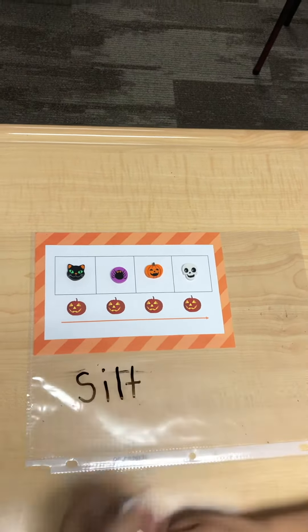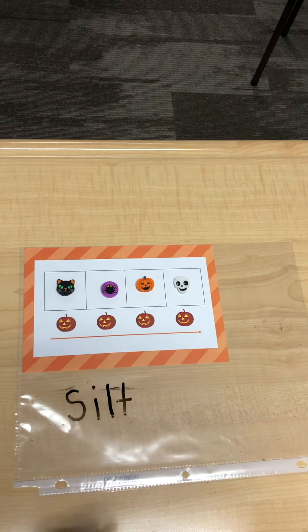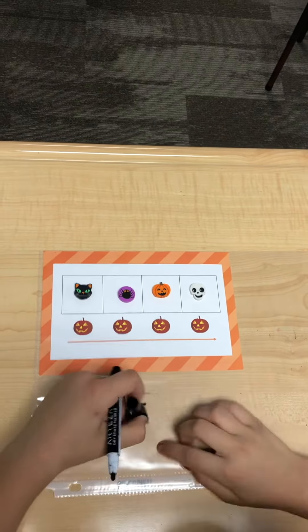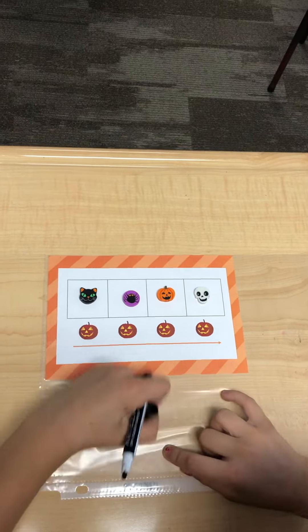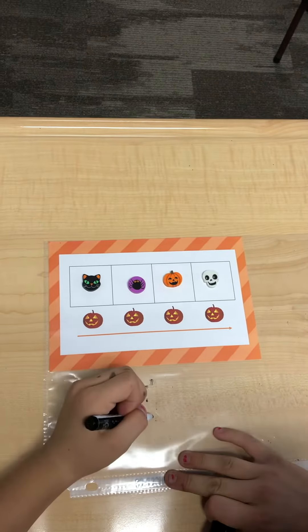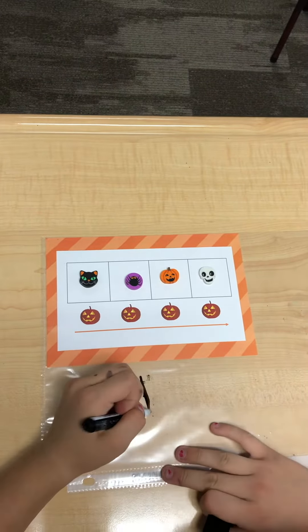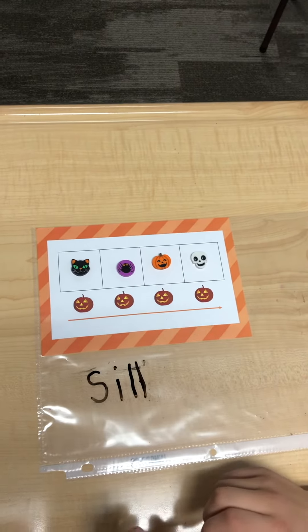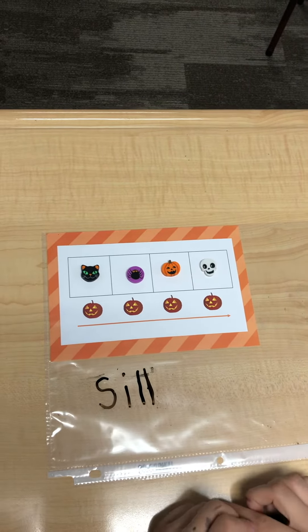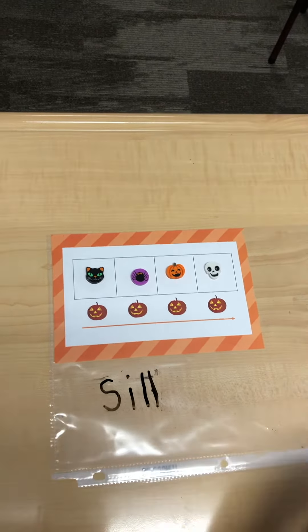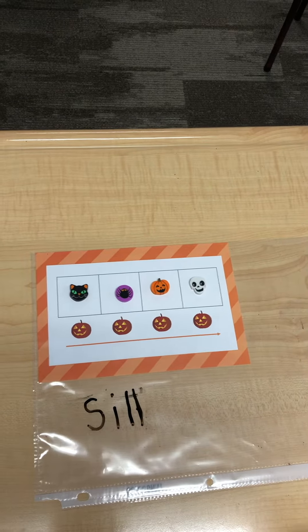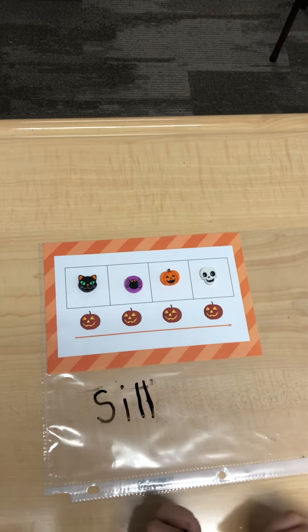Now say silt, but don't say T. Sill. Sill — like a window sill. If I was going to spell sill, what would I need to do? Floss. I would need to double the L. Why? Because it's a floss — it's a short word with a short vowel, so I'd need to double it.